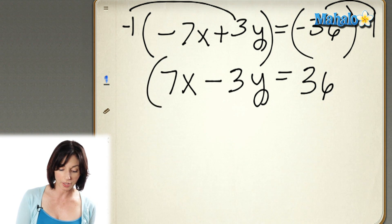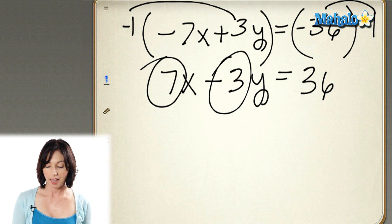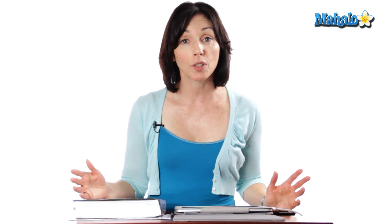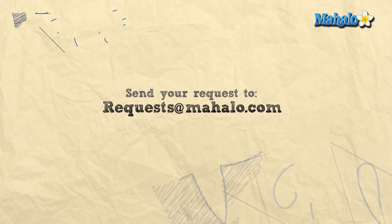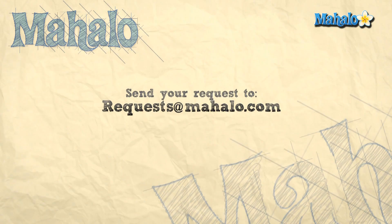This equation is in standard form. We have a positive integer in front of the x, an integer in front of the y, and our constant term on the other side of the equal sign. And that's how you put the equation of a line into standard form. Thanks for learning with me today. If you'd like more information on any of the topics, click on the links below, and be sure to rate, comment, or subscribe to our channel. If you have a specific request, please send it to requests at mahalo.com. See you next time.